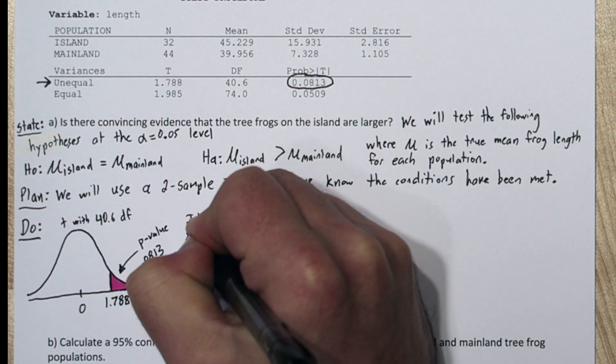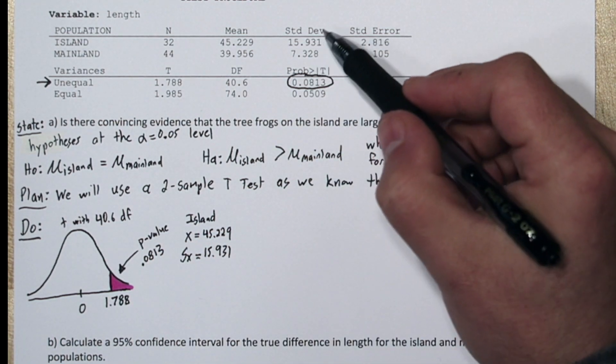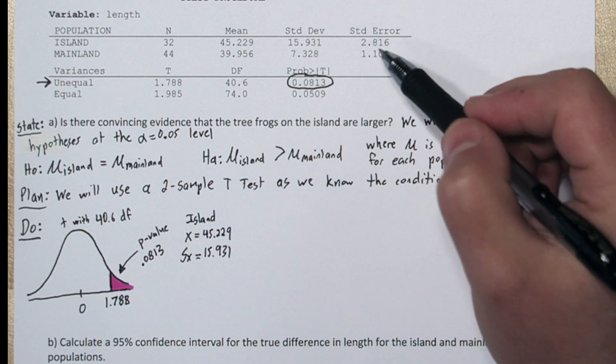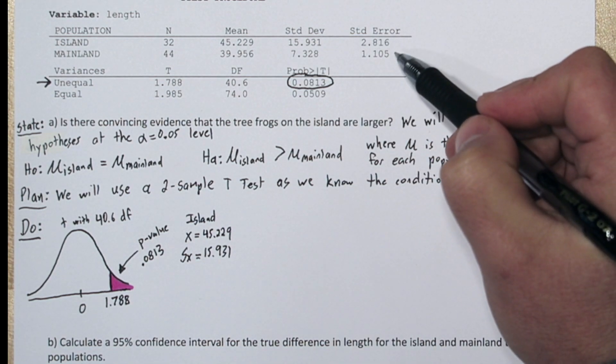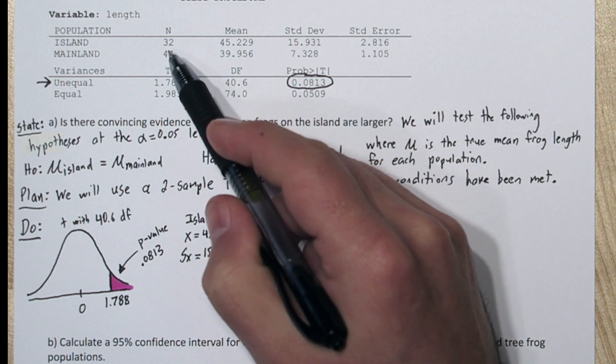In our do step let's also write the sample means and sample standard deviations. Now make sure you don't confuse the standard deviation with the standard error. The standard error has had the central limit theorem applied, and it's already been divided by the square root of the sample size.